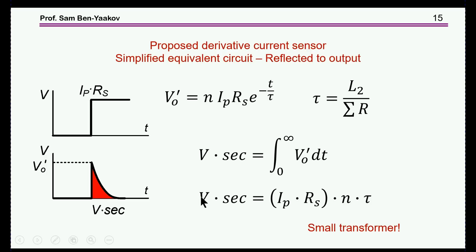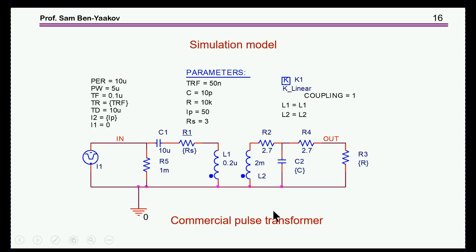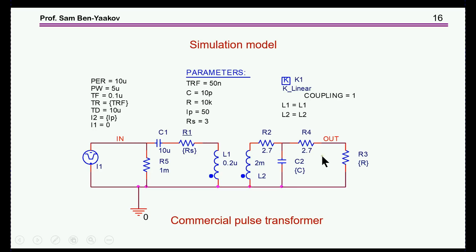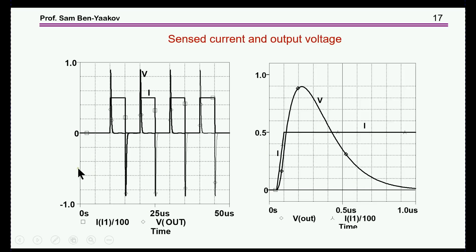Rather than going through analytical expressions, simulation results are shown to characterize the sensor. The model parameters are taken from a commercial transformer being used in voltage mode. We have the emulation of the GAN current, the RDS(on) assumed to be 1 milliohm, the output section capacitance which could be the winding capacitance plus an added capacitor, the secondary resistance, and the load.